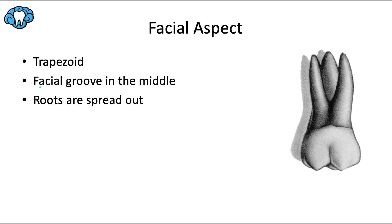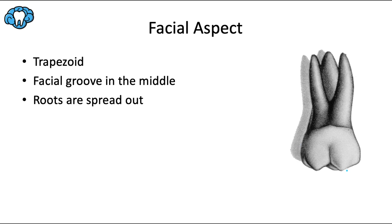Starting with the facial aspect: the tooth crown makes a trapezoid shape from the facial view. The mesiofacial cusp is slightly wider mesiodistally than the distofacial cusp, while the distofacial cusp is slightly taller. The facial groove is at the exact center of the tooth, in line with the palatal root. This facial groove migrates distally in the second molar and even more so in the third molar.